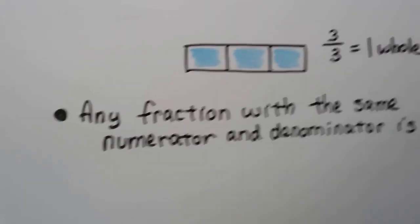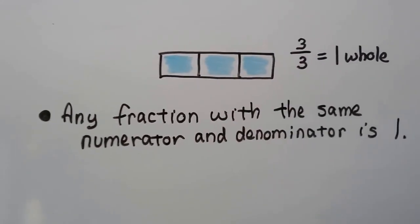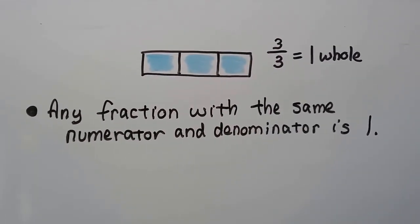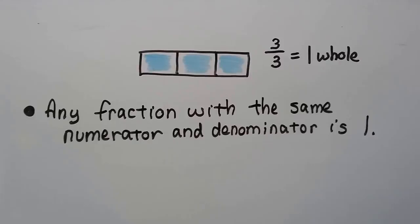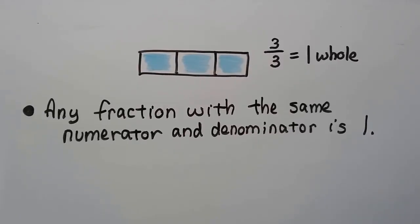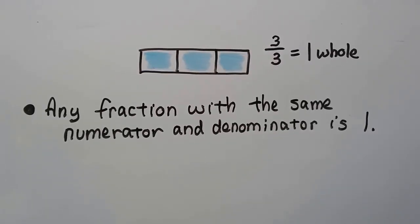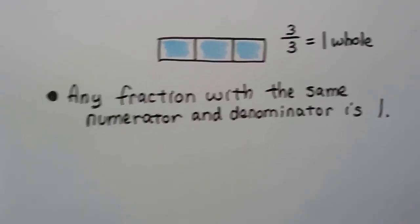I want you to remember this: any fraction with the same numerator and denominator is one — it's one whole. If you have something split into three parts but you have all three parts, you've got the whole thing. So keep that in mind, because that's going to help us.